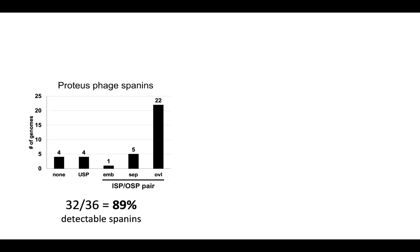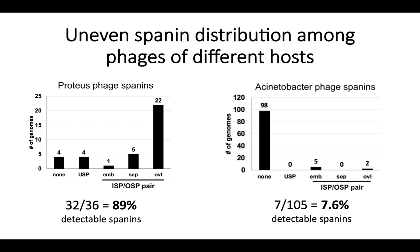In the case of the Proteus group of phages, the majority of them had detectable spanin proteins, and spanins of all different types, for a total of 89% having detectable spanins — this is very much in line with what was previously seen in the 1,100 set. In contrast, for the Acinetobacter phage group, we were really only able to find detectable spanins in 7.6% of the group, so the majority of them did not have detectable spanins.